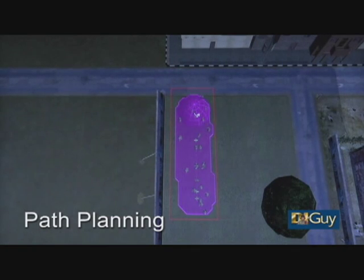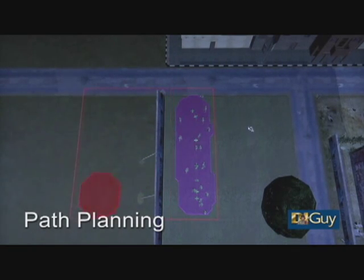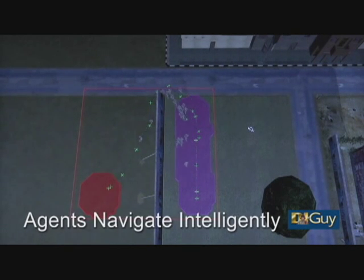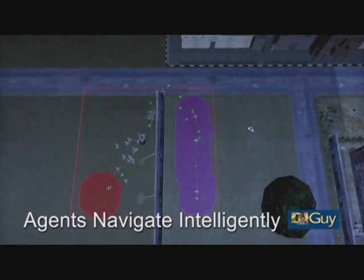Crowd agents can now intelligently navigate around the environment using an A-Star path planning algorithm. This crowd is navigating to the red region, moving around the wall in the center of the screen.